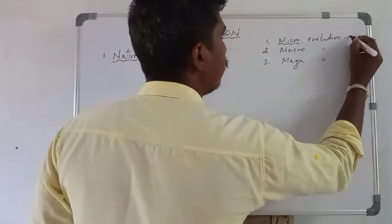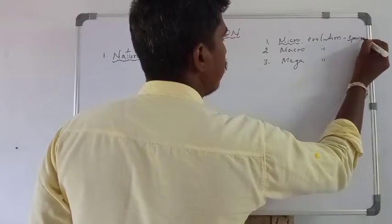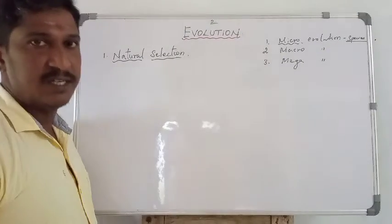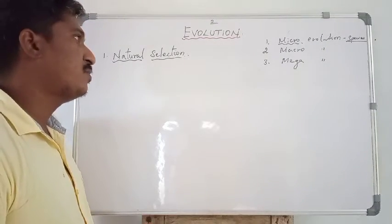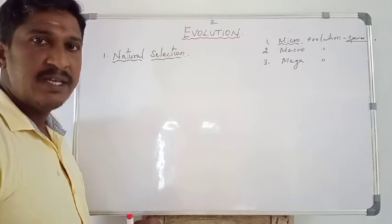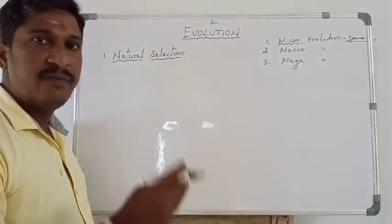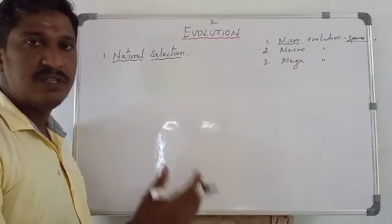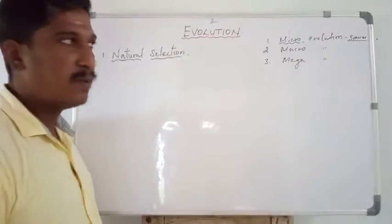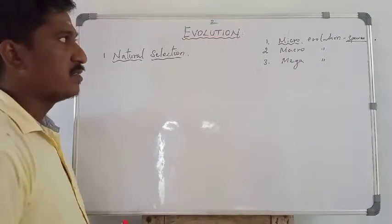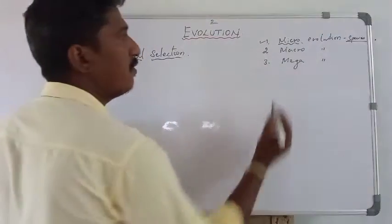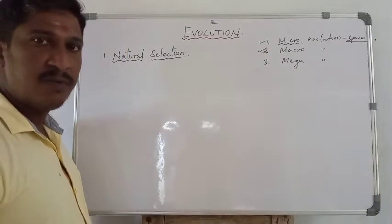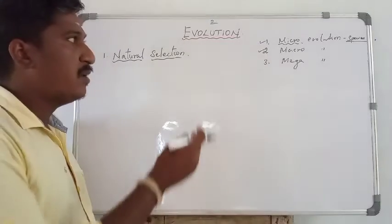In micro evolution, that evolution operates at the species level. It can make new subspecies by changing the gene frequencies of a population over a few generations.